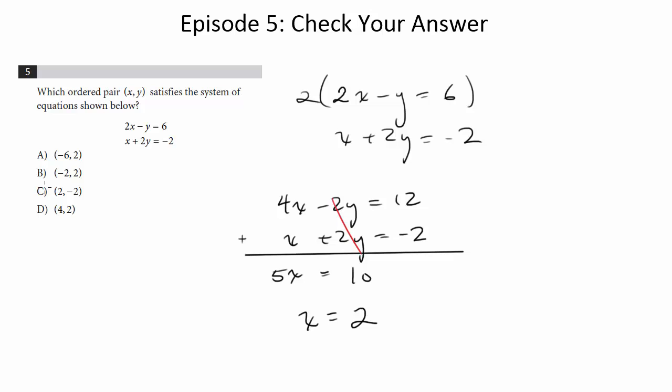And right away, notice we can pretty much go with C because it's the only one that has the x coordinate of 2. But let's plug this in and just get a y coordinate and see what happens. So let's plug it into the bottom guy. 2 plus 2y equals negative 2. So 2y is equal to negative 4. y is equal to negative 2. So hooray, that extra works for choice C.